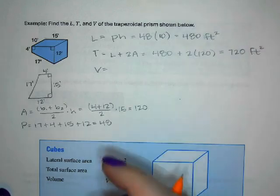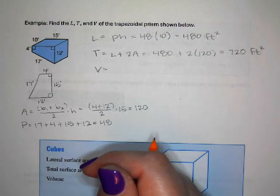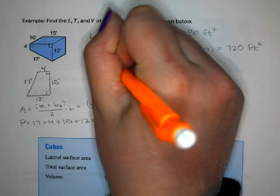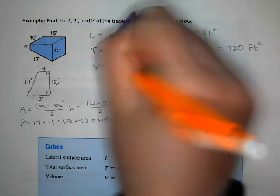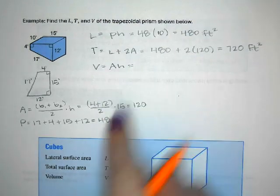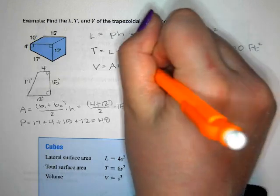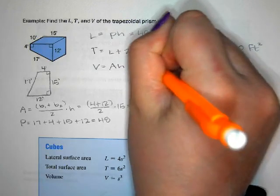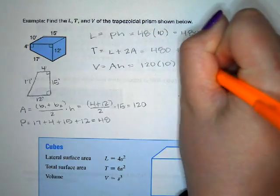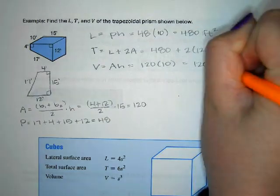Volume is area of the base times the altitude: 120 times 10 equals 1200 feet cubed.